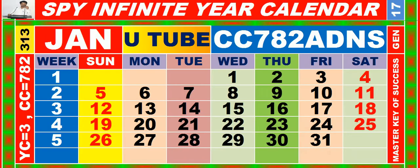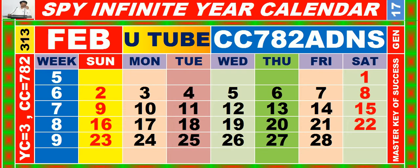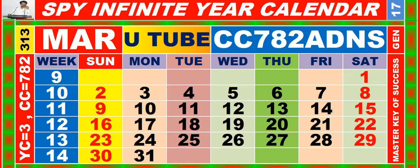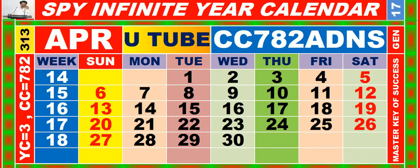Calendar for the month of January, having calendar code equal to 7, 8, 2. Calendar for the month of February, having calendar code equal to 7, 8, 2. Calendar for the month of March, having calendar code equal to 7, 8, 2. Calendar for the month of April, having calendar code equal to 7, 8, 2.